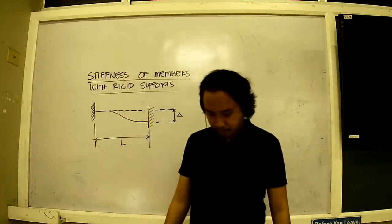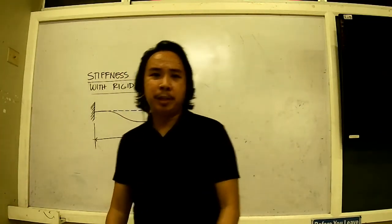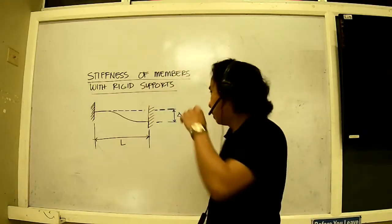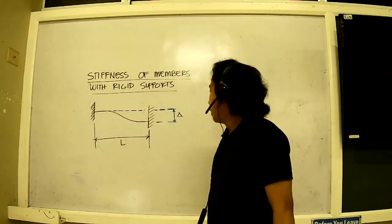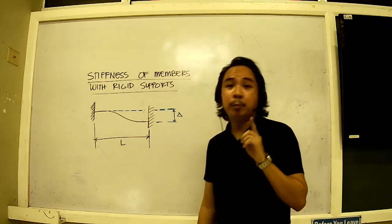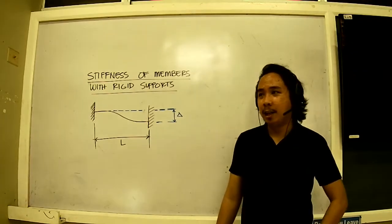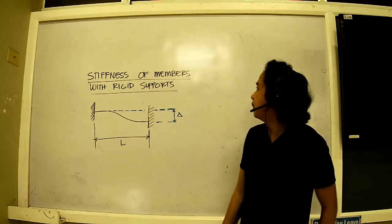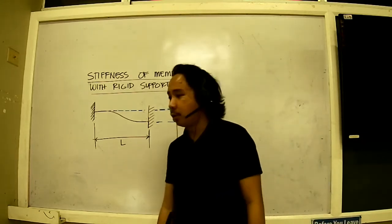Okay, so right now before we can proceed to solving a sample problem, we must first deal with one more equation. We need to define the stiffness of members with rigid supports.